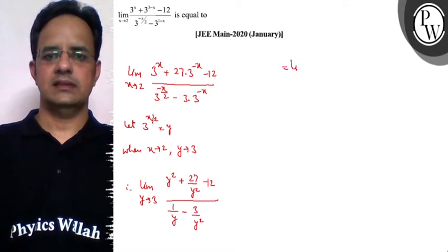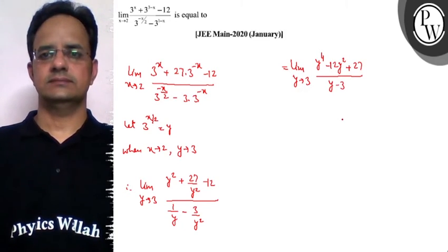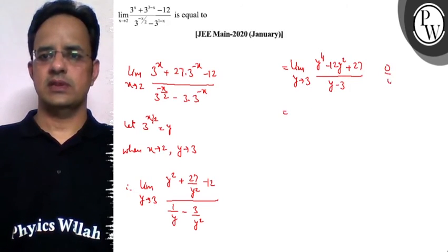Simplify this, then we get limit y tending to 3. The numerator is y to the power 4 minus 12 y square plus 27 divided by y minus 3. Now it is of the form 0 by 0, if you substitute the direct value.